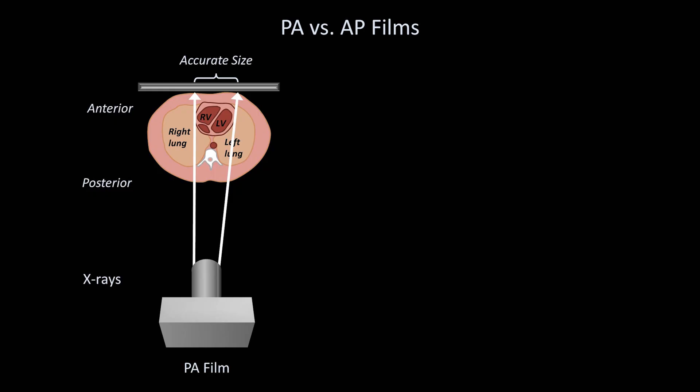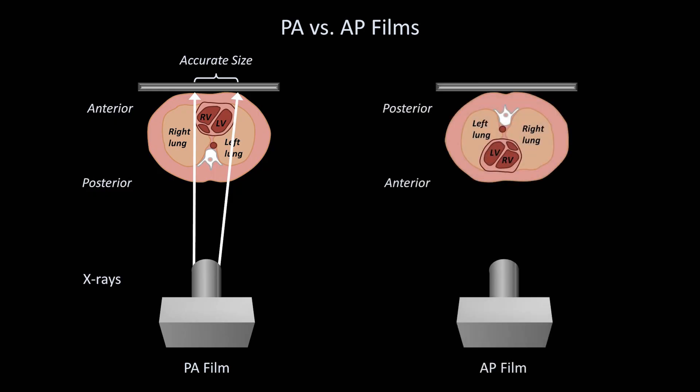However, how does this change if the same exact patient has an AP film taken? Now there is greater separation between the heart and the film. As a consequence, the diverging x-ray beams will create a larger shadow that will exaggerate the size of the heart. In short, the heart size is only accurate when assessed on a PA film. Some structures within the mediastinum suffer from the same effect, but to a lesser extent, as normal mediastinal structures tend to be more centrally located within the thorax.